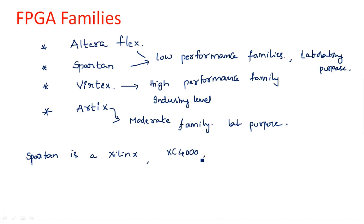For example, XC 4000 or XC 5000 — like this, we have different logic families with designations like XC 5000, 4000, 6000 and so on. Suppose if you are taking any mobile like Samsung mobiles, they are having different names like S series, F series, and M series phones. Depending on the budget and availability, they have particular series numbers — S series for high-end, M for medium, A for moderate mobiles. Like that, we are having different names for different FPGA families.